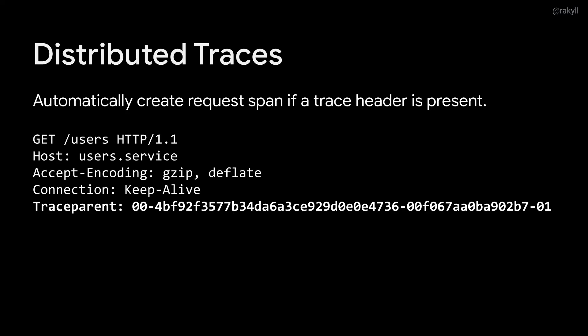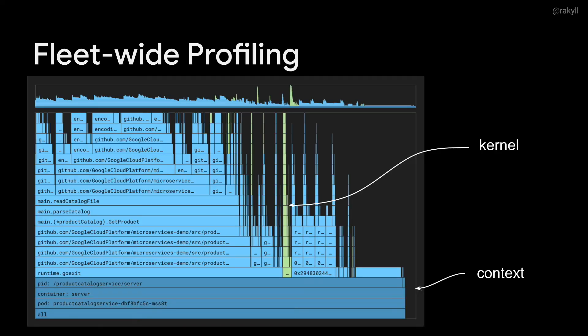eBPF can also help with distributed traces if you consistently propagate the trace headers. Data collected with eBPF can be used to generate distributed tracing spans if there's a trace context in the header. In this model, you can generate the header at load balancers or sidecar proxies and then focus only on propagating it, while span data is collected without any code changes. eBPF is also used to collect profiles continuously — both user and kernel space profiles. Here you see Pixie collecting profiles and adding context such as Kubernetes pod name, container name, and PID, so you can continuously profile without changing any code.